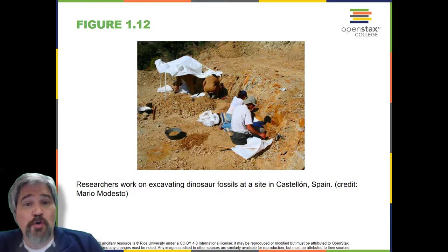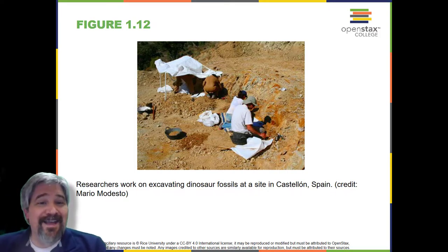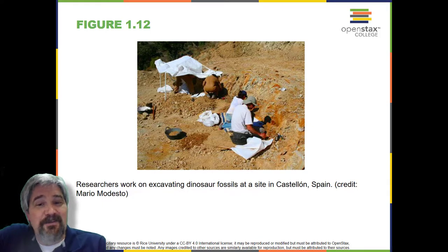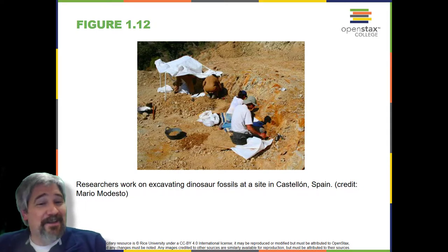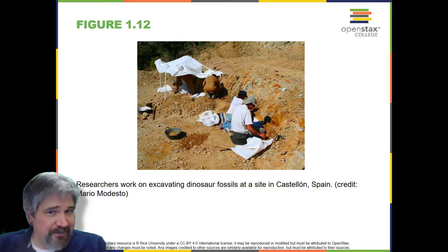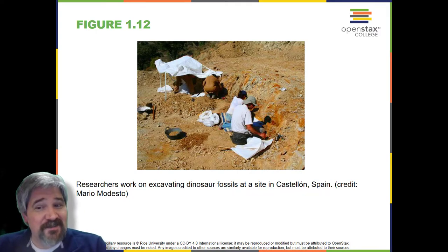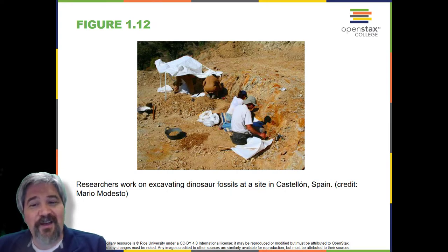Another field of biological study, neurobiology, studies the biology of the nervous system. Although it is considered a branch of biology, it is also recognized as an interdisciplinary field known as neuroscience. This sub-discipline studies different functions of the nervous system using molecular, cellular, developmental, medical, and computational approaches. Another branch of biology uses fossils to study life's history — that's paleontology. Zoology and botany are the study of animals and plants, respectively. Biologists can also specialize as biotechnologists, ecologists, or physiologists. Biotechnologists apply the knowledge of biology to create useful products. Ecologists study the interactions of organisms in their environments. Physiologists study the workings of cells, tissues, and organs.